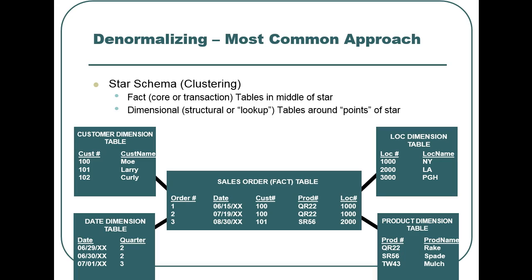The most common denormalized structure for building data warehouses is the star schema. It is called a star schema because its shape resembles that of a star. In a star schema, transactional data are placed in a central fact table, and non-transactional data are placed in dimensional tables around the fact table.